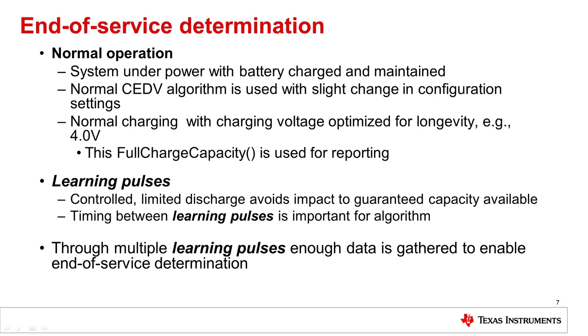The timing between pulses is important for some parts of the algorithm. As we capture pulses over time — it may be once a month or once every few weeks — we process that data and estimate the end-of-service of the cell.